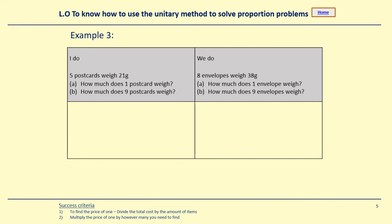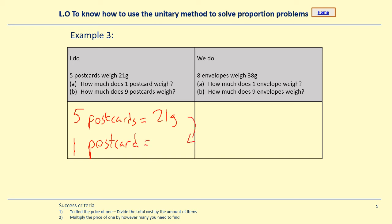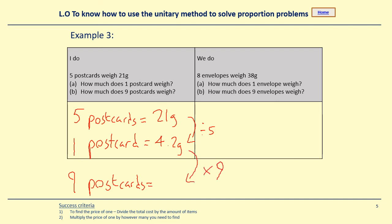For this one it says five postcards weigh 21 grams. How much does one postcard weigh? So five postcards = 21 grams, and we want to work out one postcard. A fifth of the amount of postcards will be a fifth of the weight, so we divide 21 by 5, which gives me 4.2. So each postcard weighs 4.2 grams. How much do nine postcards weigh? One postcard weighs 4.2, times that by 9: 4.2 × 9 = 37.8 grams. Please copy that one down and then try the next 'we do' for me.